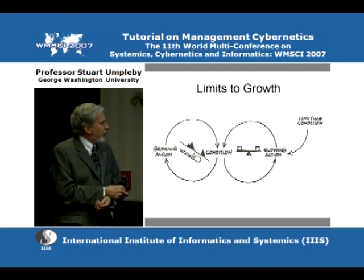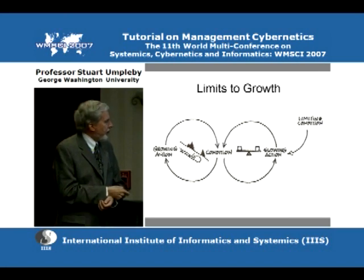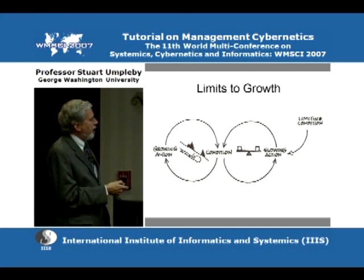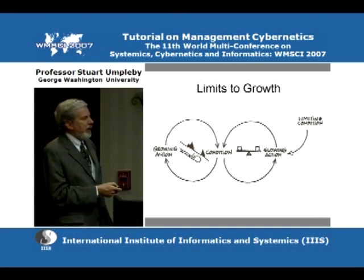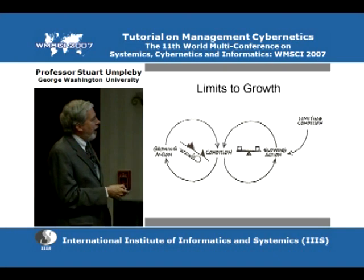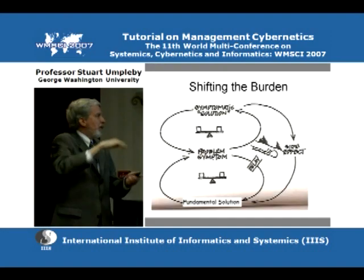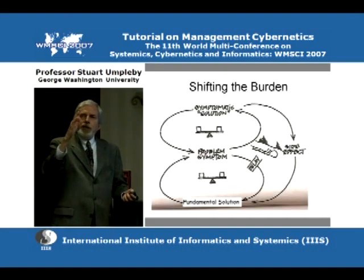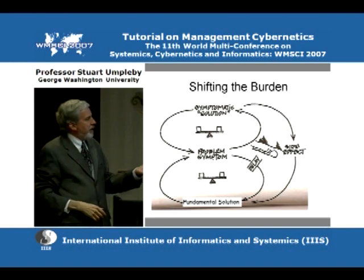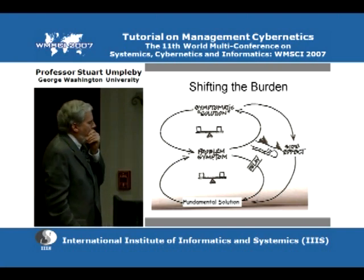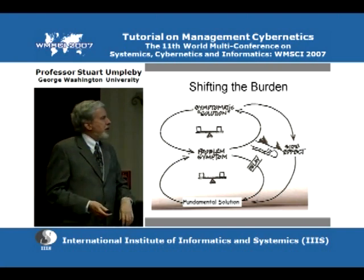The limits to growth dynamic: if you have a high birth rate you get more people, which gives you a higher birth rate. Then a slowing action — persistent pollution or rising per capita income reducing desire for children — creates the classic S-curve, where first the positive feedback loop dominates producing growth, then it levels off due to the negative feedback loop.